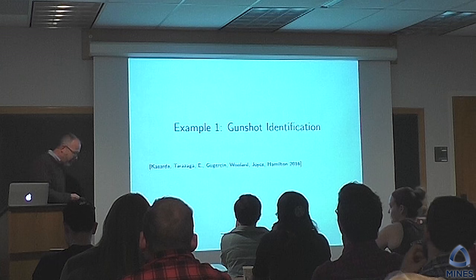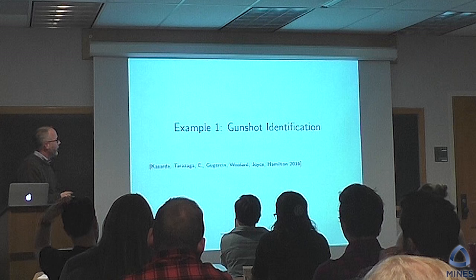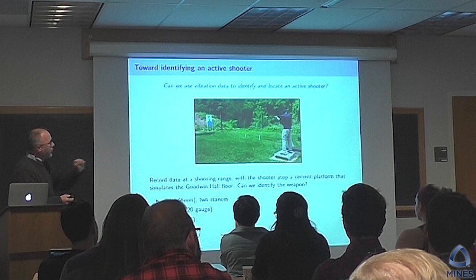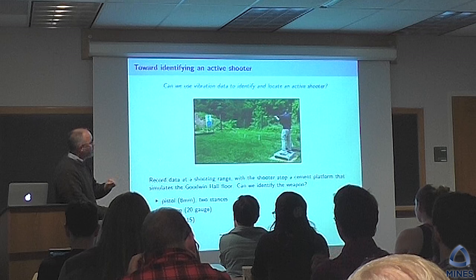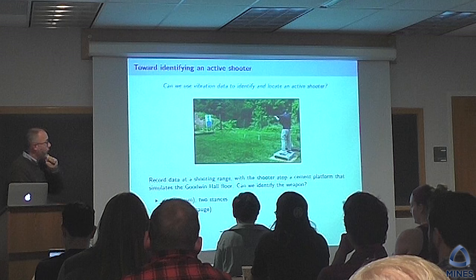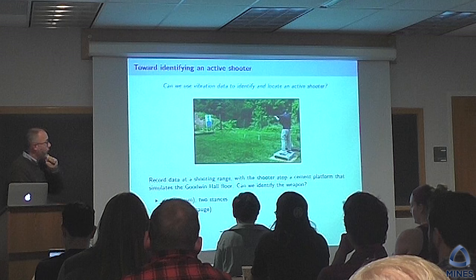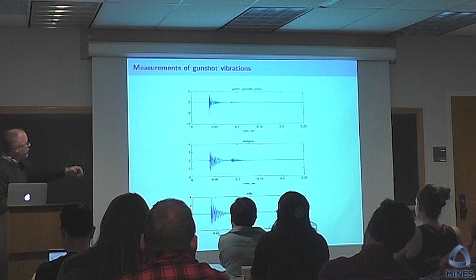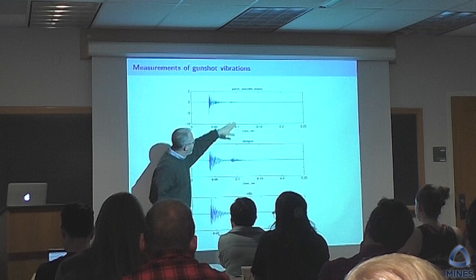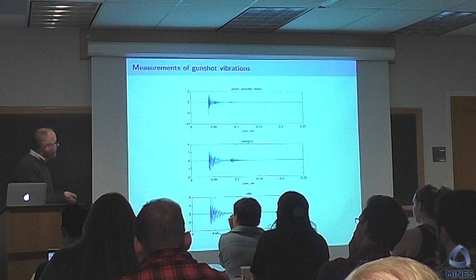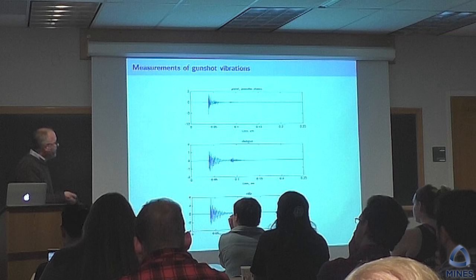I want to describe a couple of specific applications involving linear algebra. The first is gunshot identification — some members of the lab went to a local shooting range with three weapons: an 8mm pistol, a 20-gauge shotgun, and an AR-15 — rigged up a platform with one of these accelerometers to study the vibrations as the shooter fired. The goal is to detect different kinds of gunshots from the vibrations. The pistol has a little blip, the shotgun has a larger secondary blip, and the rifle shows something different. Maybe just from these examples, you might be hopeful we can tell these weapons apart.